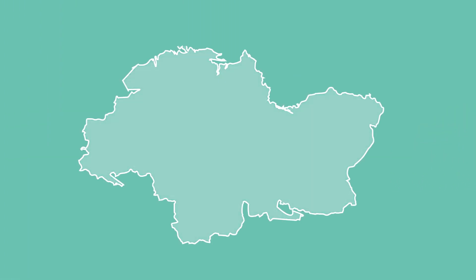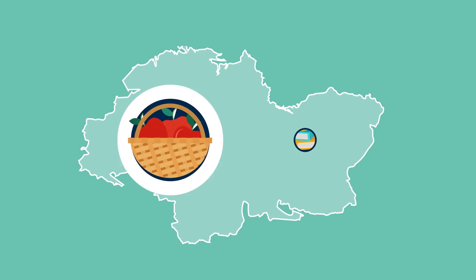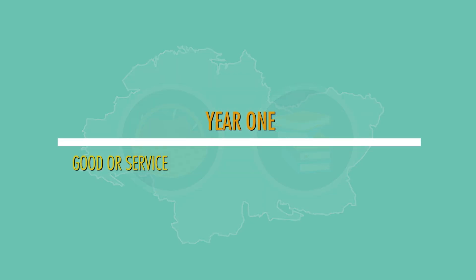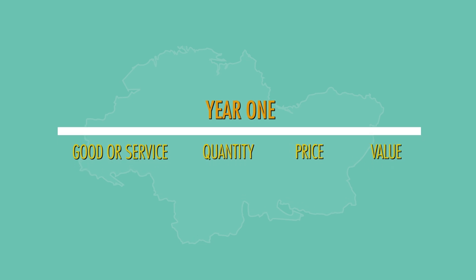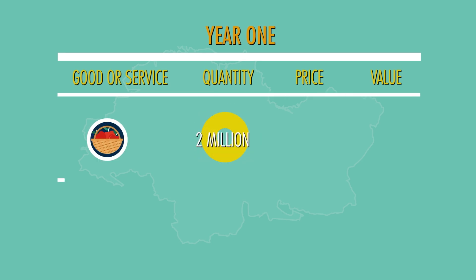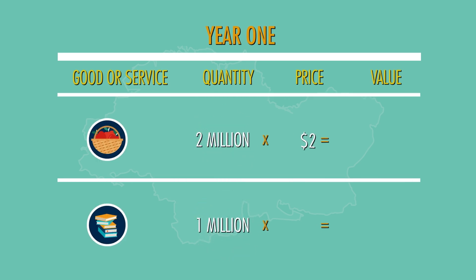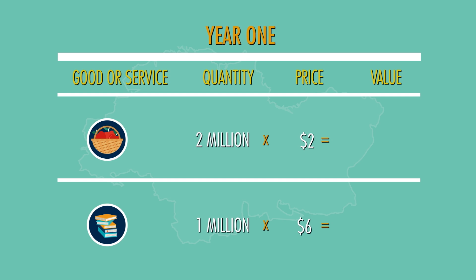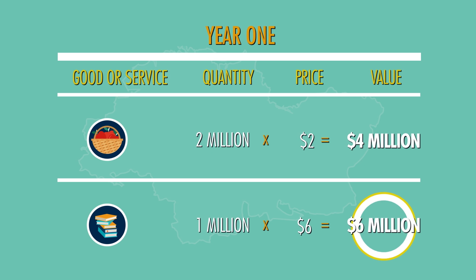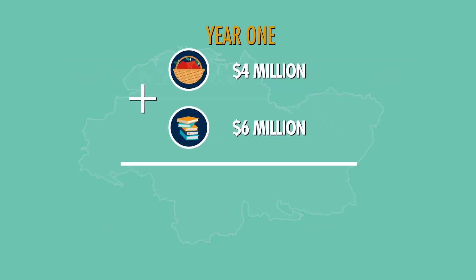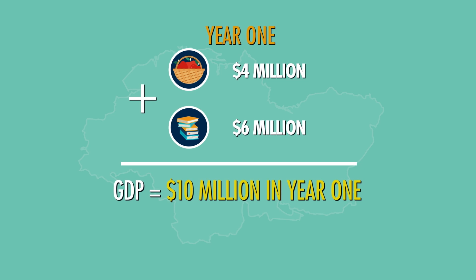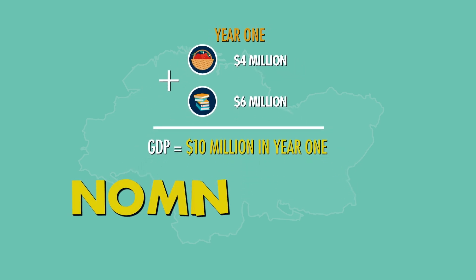To see how GDP is calculated, consider a simple example of a fictional country that produces only two goods: apples and books. This country calculates its GDP using the quantity and the price of each good it produces this year to determine its market value. Suppose that the country produces two million apples and one million books. The price of an apple is two dollars and the price of a book is six dollars. So this year the total value of the country's apple production is four million dollars and the total value of its book production is six million dollars, and the sum of both values equals ten million dollars. That sum is called this country's nominal GDP.